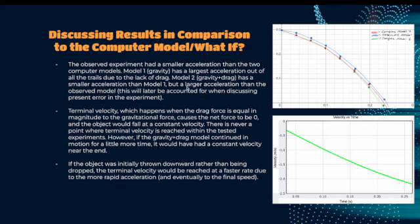So the observed experiment had a smaller acceleration than the two computer models. Model one, which only accounted for gravity, had the largest acceleration out of all the trials due to the lack of drag and other forces counteracting the motion. Model two, which was gravity and drag, had a smaller acceleration than model one but a larger acceleration than the observed model. And this will later be discussed when discussing present error in the experiment.